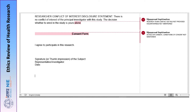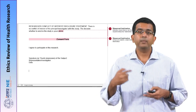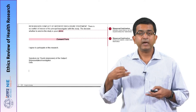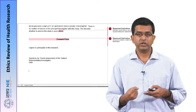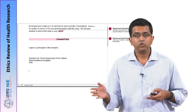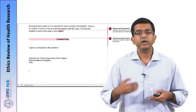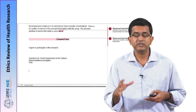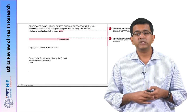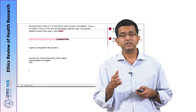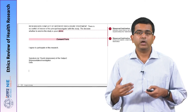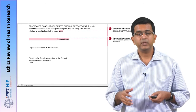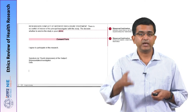That covers the information sheet part of the document. Now comes the consent form part. The consent form has to provide the conditions under which consent is being given — that is, after completely reading the information sheet, after understanding the various aspects of participation, after understanding it is completely voluntary with no undue coercion or pressure. Those conditions have to be specifically mentioned in the consent form, and that is not present in this case. This is a typical example of an inappropriate consent form which can be improvised based on these comments.